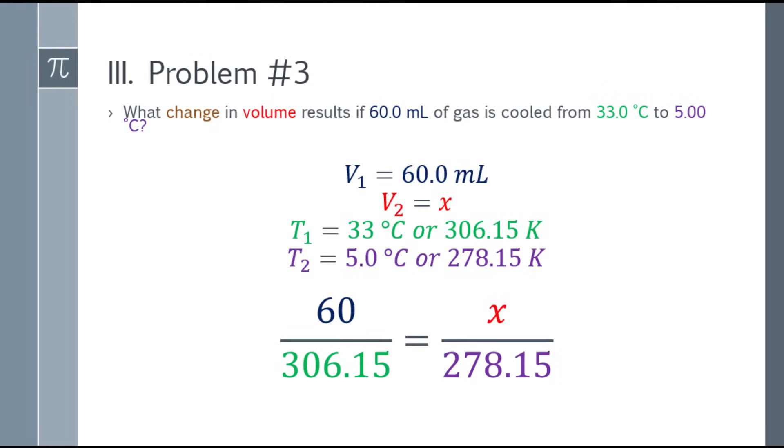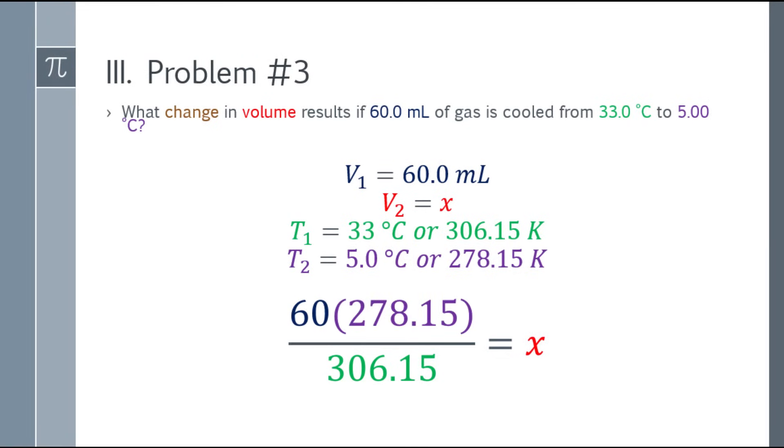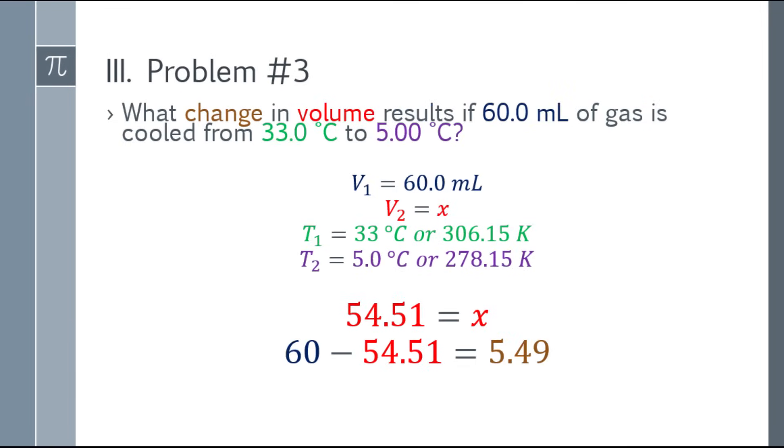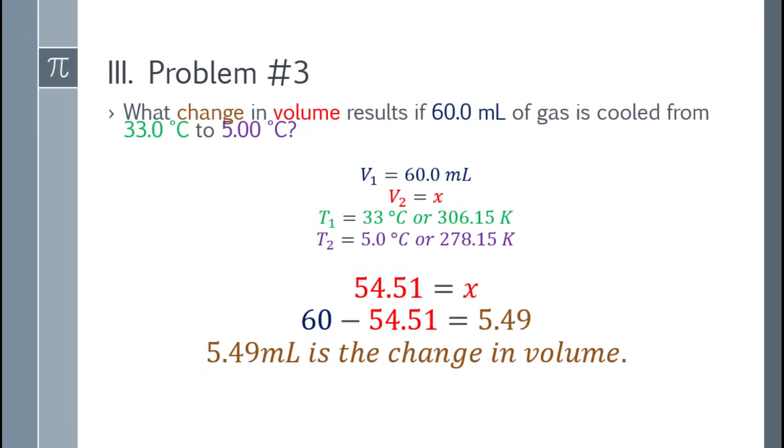So to find the value of x, just cross-multiply. 60 multiplied by 278.15, then divide that answer by 306.15. The final answer, after rounding, is 54.51. However, what we're looking for is the change in volume. So find the absolute value. 60 minus 54.51, and you will get an answer of 5.49. So 5.49 mL is the change in volume. That's the final answer for problem number 3.